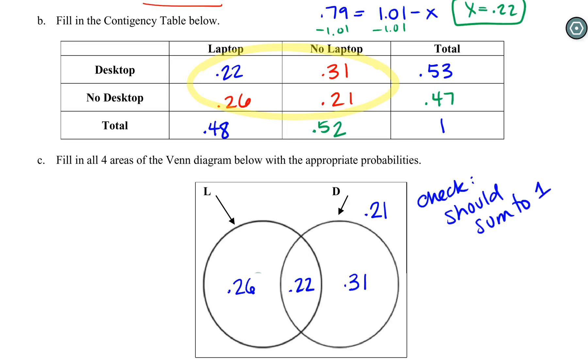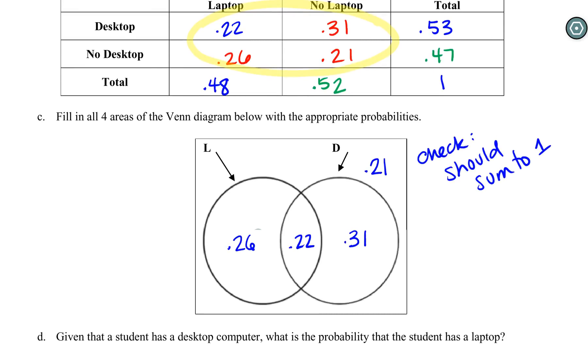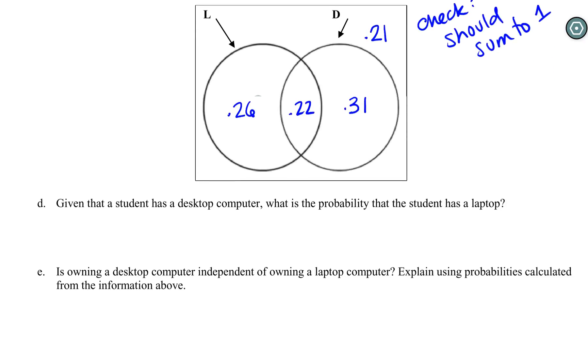Now we're going to use these two displays to answer a couple questions. First one: given a student has a desktop, what is the probability they have a laptop? We have a conditional probability—this is something I test over and over again on the exam because it's the heart of our hypothesis testing. This translates to: given desktop goes behind the line, P(L|D). We have two options: we can either use the formula, replacing A's and B's with L's and D's, so our given becomes an and divided by what we know, and then we can pull those pieces off the table.